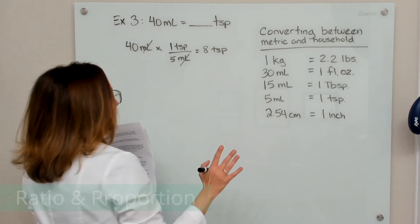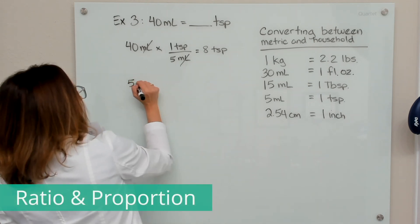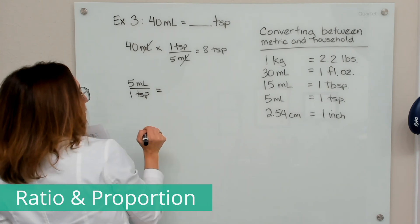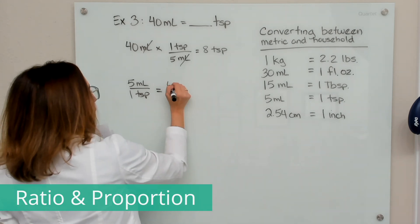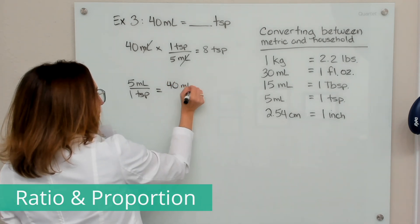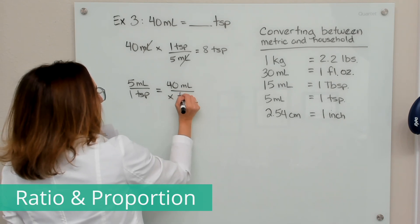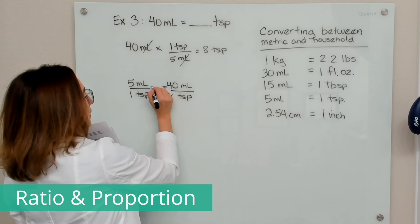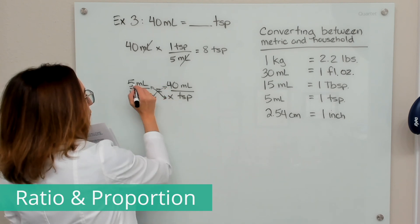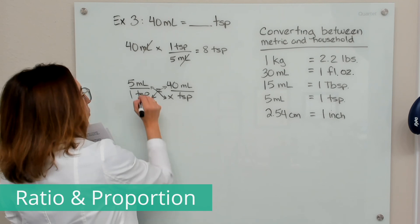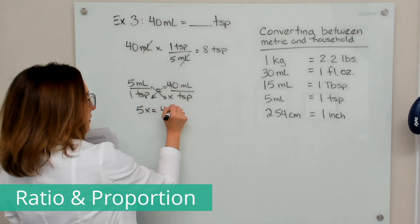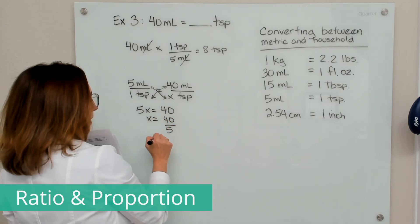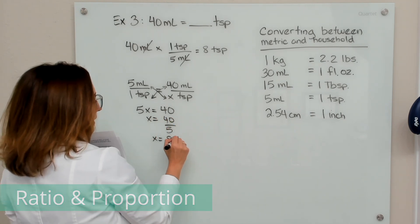Now let's do the same thing with ratio and proportion. Five milliliters is in one teaspoon, and we want to know for 40 milliliters, how many teaspoons is that? We cross multiply: five times x equals five x, and one times 40 is 40. Solving for x: x equals 40 divided by five, so x equals eight teaspoons.